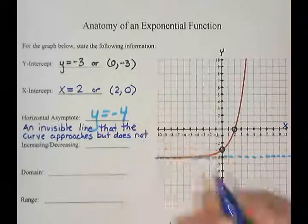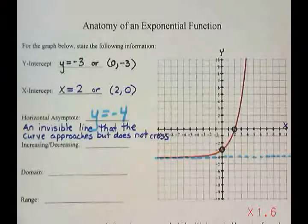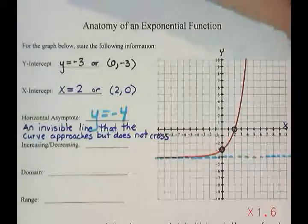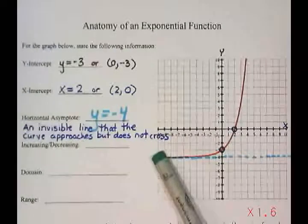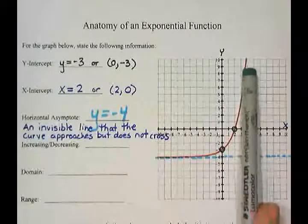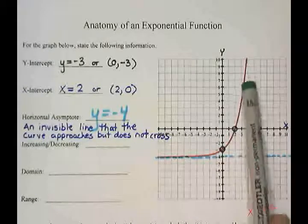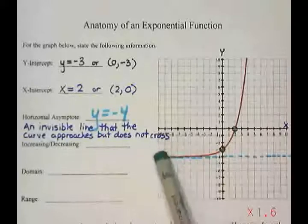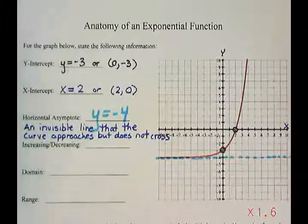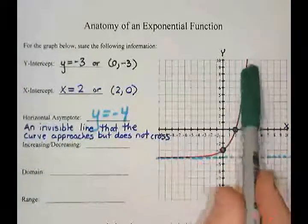It does not cross, does not touch. Now increasing and decreasing is my absolute favorite. Something that is increasing is going to be going up, and we're always going from left to right. You put your finger or pencil on the curve, follow it, and if it's going up, that's increasing. If it was going down, that would be decreasing. So I would say that this graph is definitely increasing.